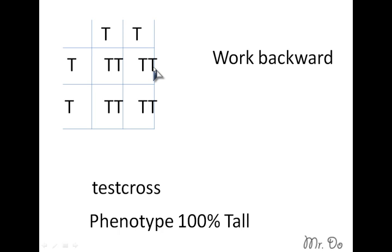So in a test cross, you can't use dominance to figure out the unknown. You have to use recessive. It allows you to work backward. So the other parent is homozygous dominant.